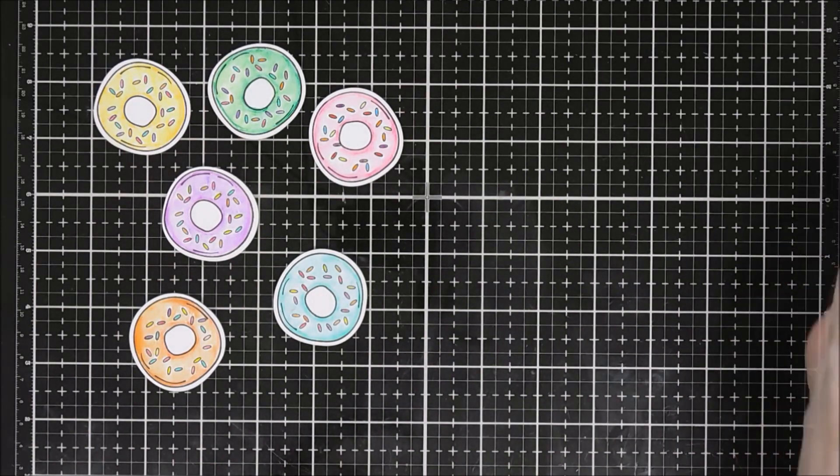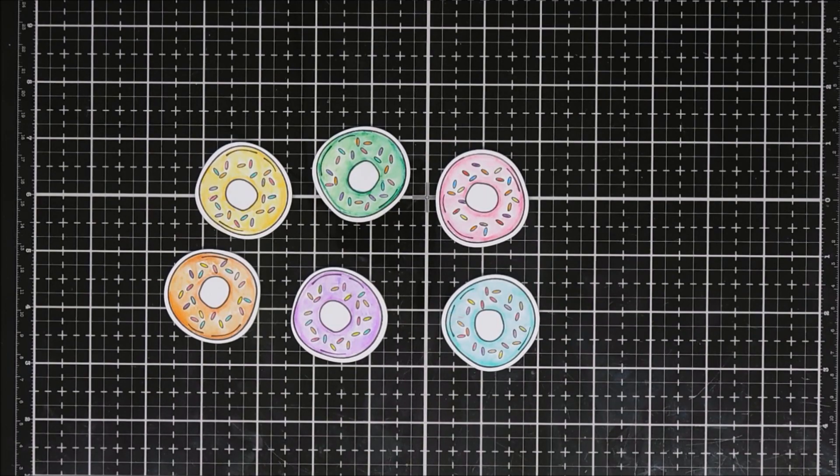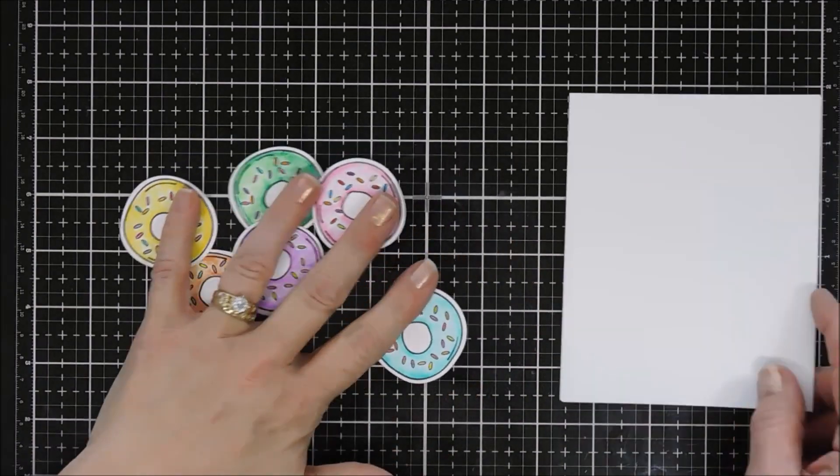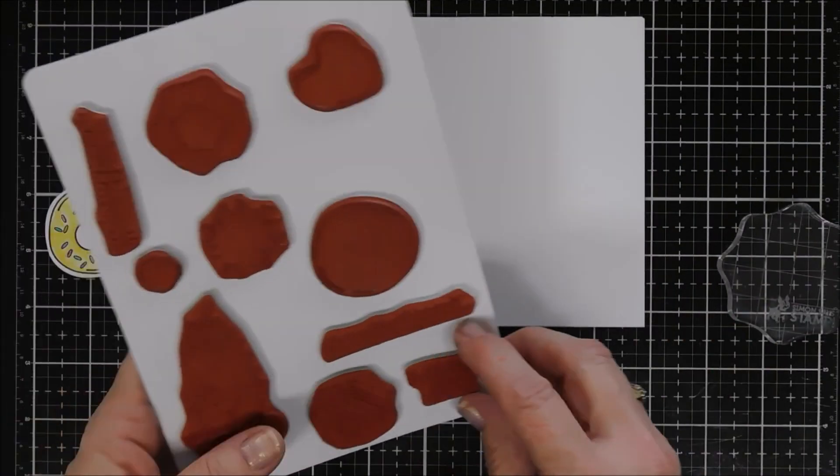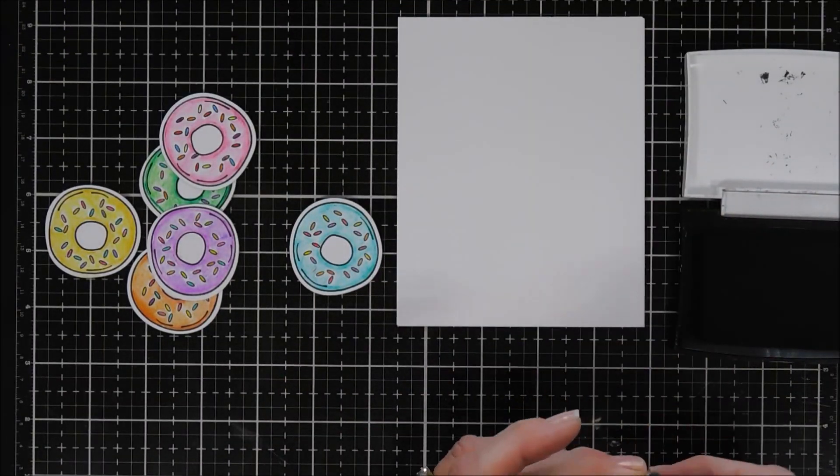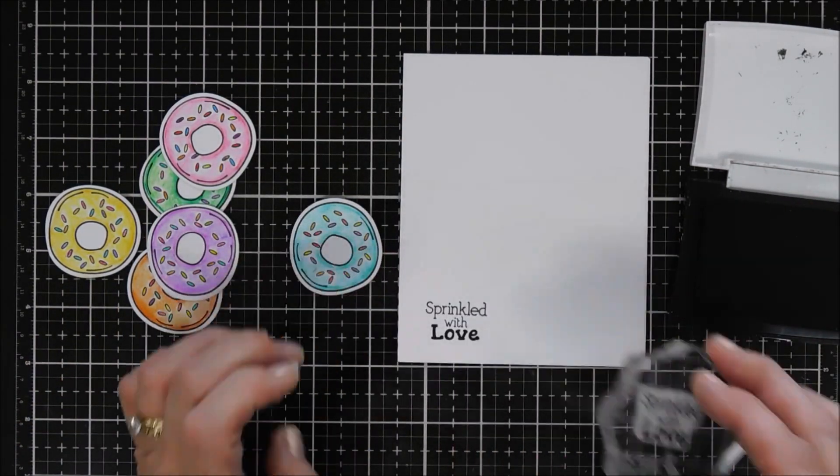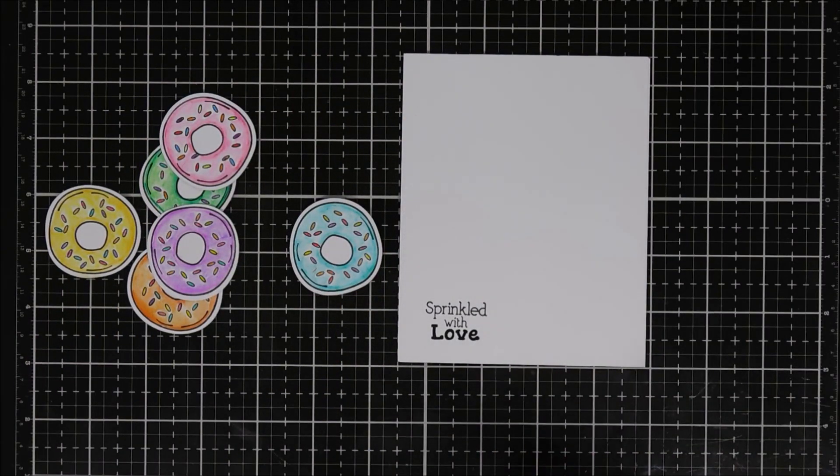Now we're going to go ahead and stamp our sentiment for this card. I chose the sentiment that said 'Sprinkled with love.' I'm going to use the same ink I used for my donuts, which is my VersaFine ink. We're just going to stamp that on some black cardstock.